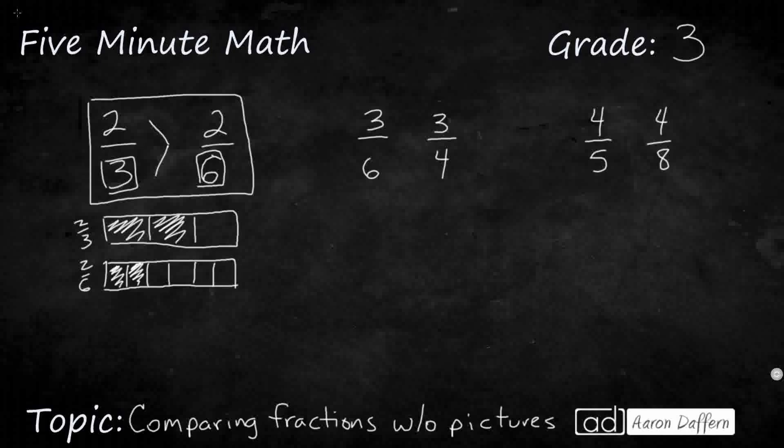So, let's see if we can do that with this 3-6ths, and this 3-4ths. Once again, in third grade, we either need to have the same numerator, or the same denominator. So, we have the same numerator here. So, I'm thinking, okay, so which of these are going to have smaller pieces? Right? The 6ths or the 4ths, because each of them have 3 pieces taken.